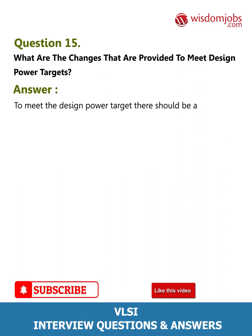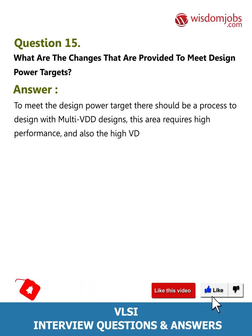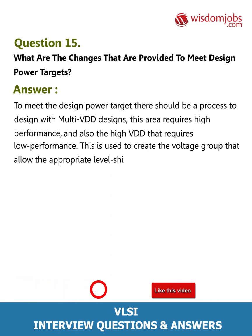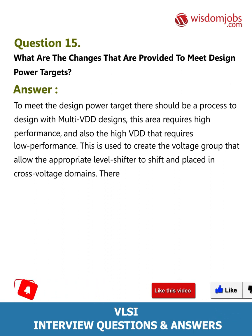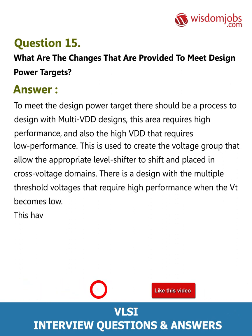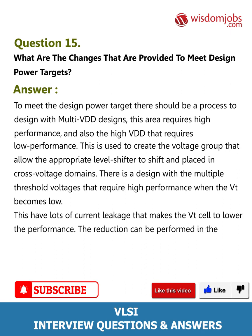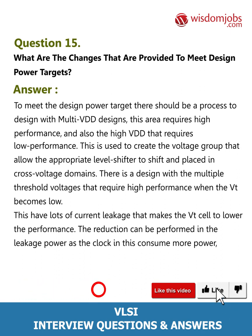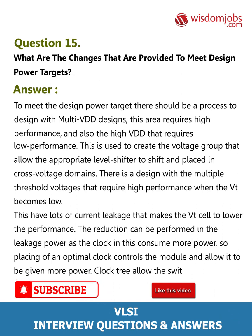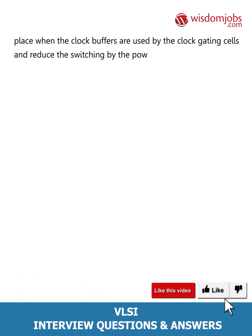Question 15: What are the changes provided to meet design power targets? Answer: To meet design power targets: use multi-VDD designs where high-performance areas use high VDD and low-performance areas use lower VDD, with level shifters placed at cross-voltage domain boundaries; use multiple threshold voltages — low Vt for high performance with higher leakage, high Vt to reduce leakage; and use optimal clock gating to reduce switching power, as the clock consumes significant power. Clock gating cells allow the clock buffers to switch only when needed, reducing power.